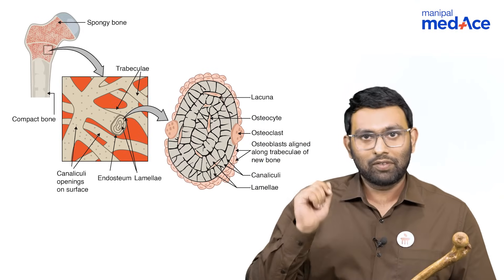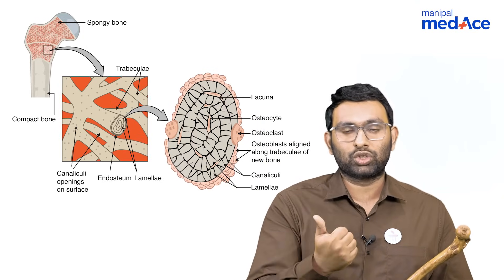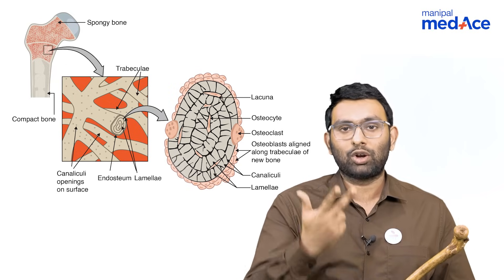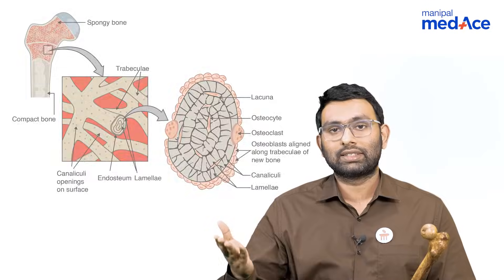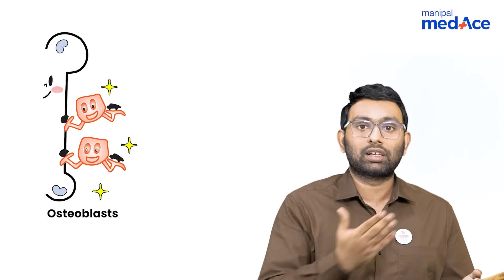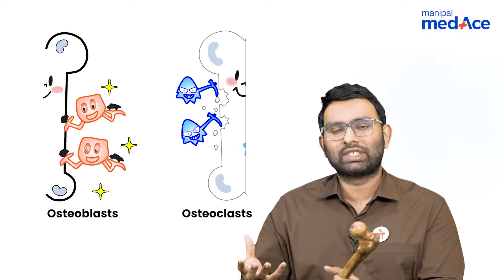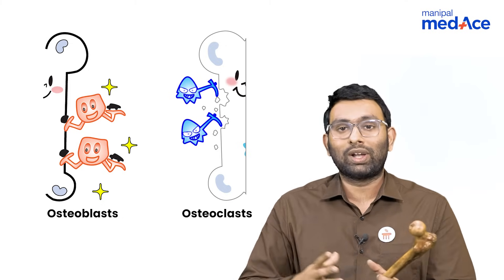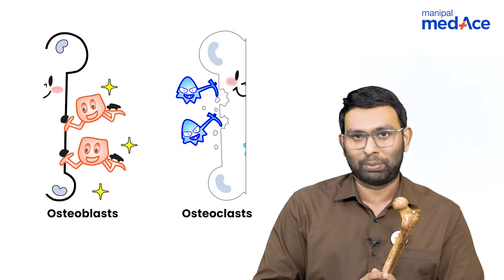If you want to see further, you break the bone down again and you will get an image where you are able to identify three important cells: osteocyte, osteoblasts, and osteoclasts. Please remember that osteoblasts are builder cells — they build bone. Osteoclasts are cutter cells — they cut down or resorb the bone. Osteocytes are present in the majority and are a form of resting osteoblasts.